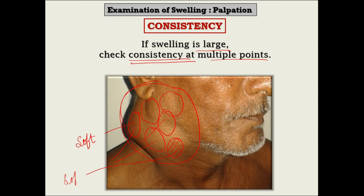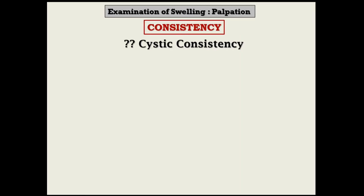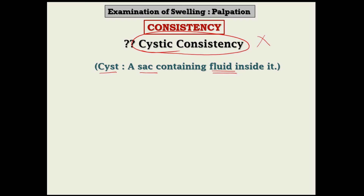If consistency is the same all over the swelling, you can call it uniform consistency. If there is variation in consistency at some places, it is best called variable consistency. Now, regarding cystic consistency — I'm sure you must have heard and read about this term, but unfortunately there is no such thing as cystic consistency. A cyst is a sac which contains fluid inside it, and the presence or absence of fluid can be confirmed by the fluctuation test, which we will discuss in the next video.